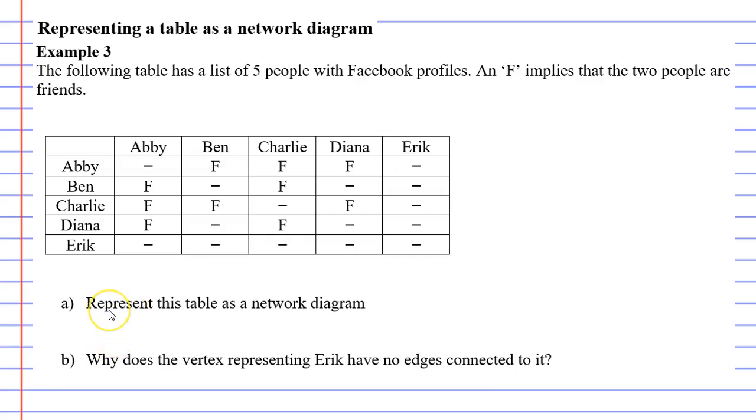So we'll complete question A, we'll represent this table as a network diagram and we'll start by labelling our vertices. So we'll need 5 vertices for 5 people and when I draw my vertices, I like to draw them in a circular shape. I'm going to label them with the letters A through to E since the first letter of each name is A through to E.